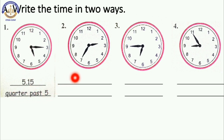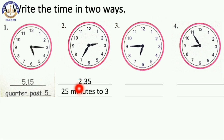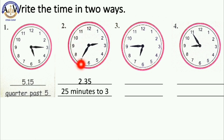The second one: here the minute hand is on 7 and the hour hand is on 2. So the time is 2:35. Write here 2:35. And the minute hand is on the left hand side, so in words the time is 25 minutes to 3.